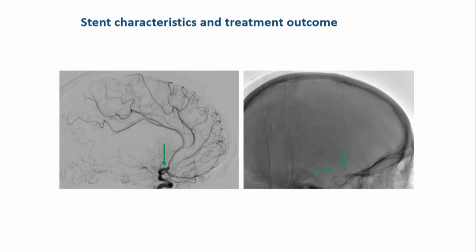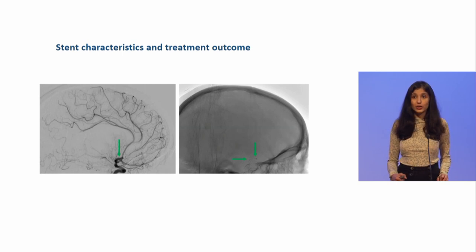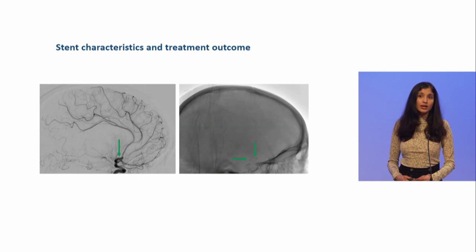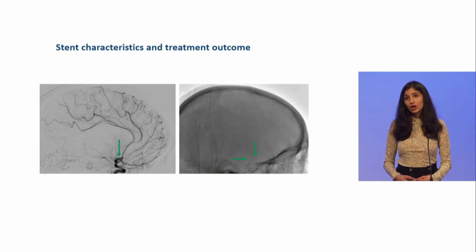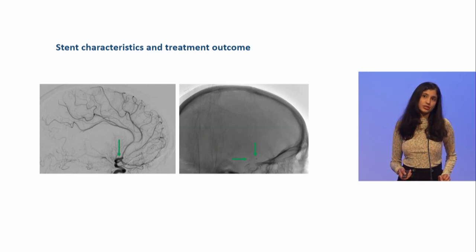So, we studied if the stent was placed correctly in terms of the location of the occlusion, if it was deployed well, and if it was in a straight or a curved geometry, and we assessed if this influences technical outcome of how well the artery re-canalizes. But we found that there was no association between the stent characteristics and treatment outcome.